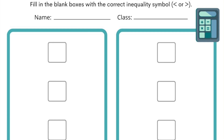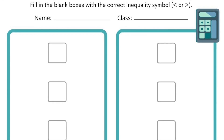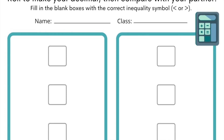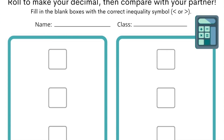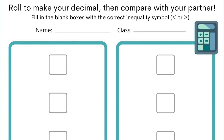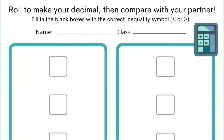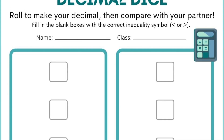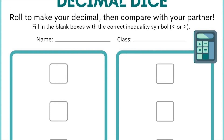To play this activity, students are split into pairs and provided with the following worksheet. You decide how long students' numbers will be, and students roll their die however many times needed to complete their number. You could start with tenths and then move up to hundredths or thousandths depending on the level of the class.